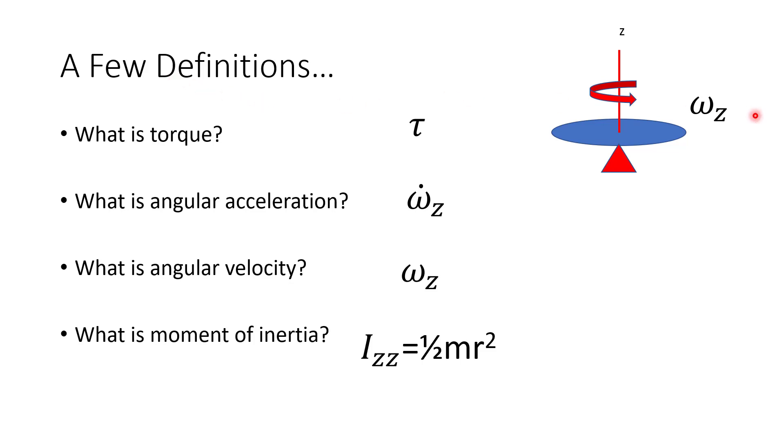Torque is what must be applied to something to get it to rotate. For example, say this is a merry-go-round rotating about this axis. If I apply a force in this direction, it will induce a torque and cause it to rotate. It will give it an angular velocity, say, one revolution per second. The rate at which it might be increasing or decreasing is called angular acceleration. And then how the mass is distributed about the rotation axis is the moment of inertia. Just take the mass of this disk, multiply it by this radius squared, and then take a half.